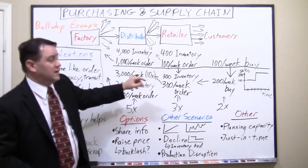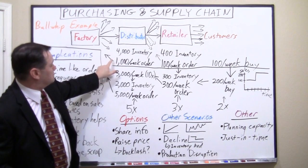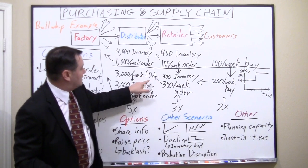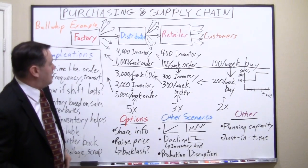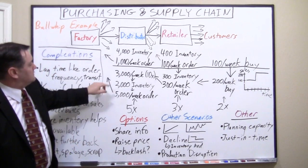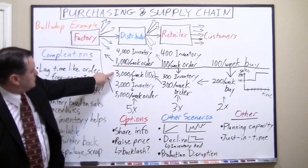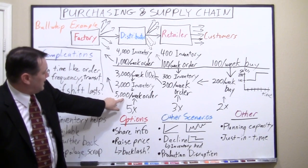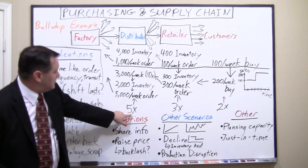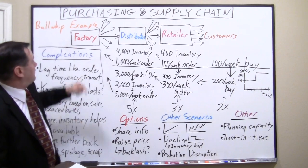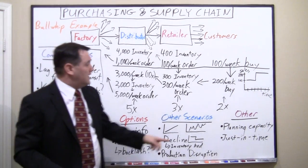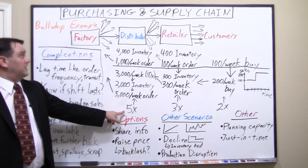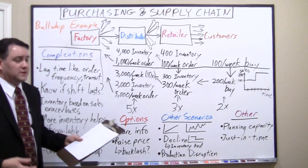Now let's say this happens at all retail locations. The distributor has 4,000 in inventory and now has 10 retailers each ordering 300 a week — that's 3,000 a week. They only brought in 1,000, so they draw 2,000 out of inventory, dropping it from 4,000 to 2,000. They now order 5,000 per week to cover demand and replenish. So they've gone from 1,000 to 5,000 — a 5x increase. A doubling at customer level created a tripling at retailer level and a quintupling at distributor level. That is the bullwhip effect.